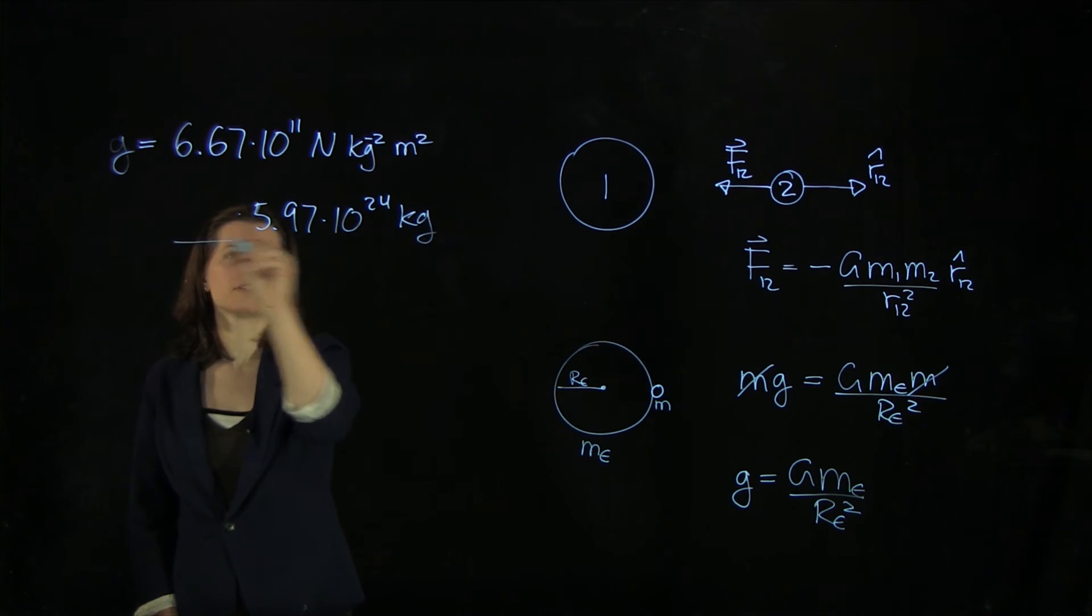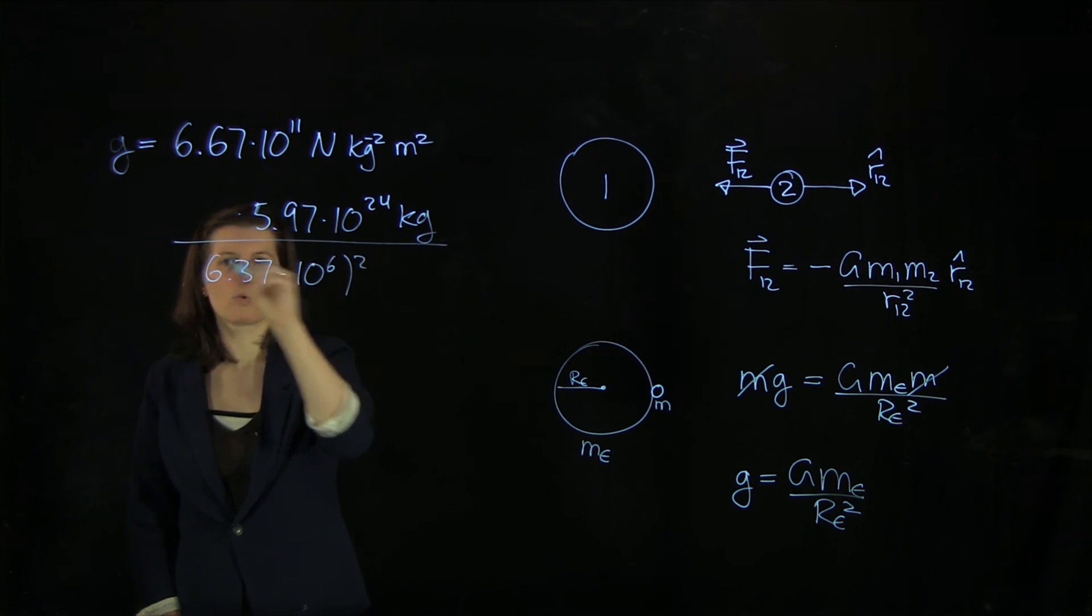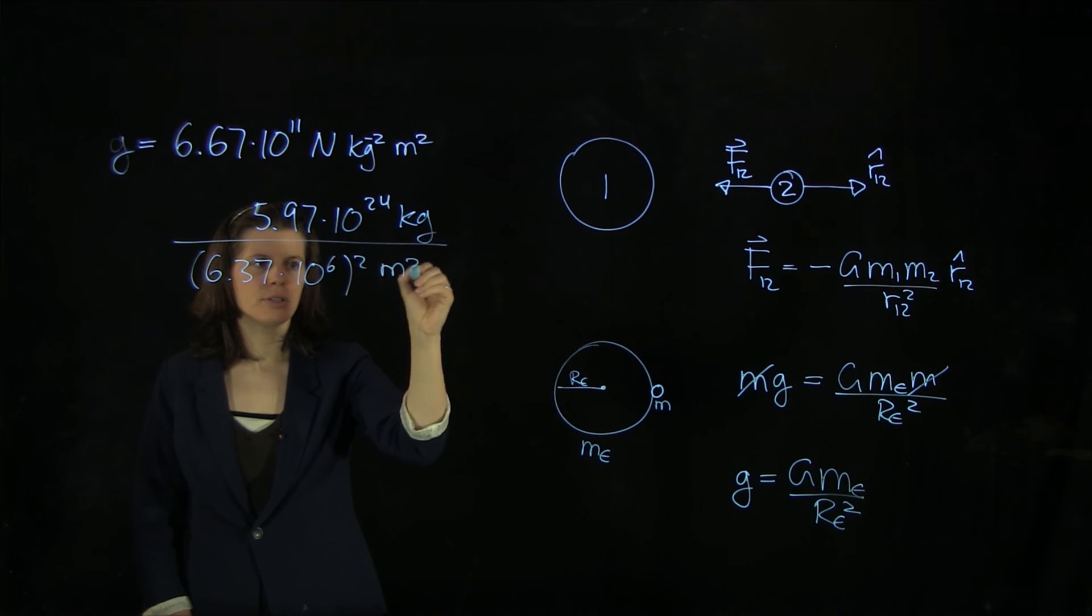And then we have to divide this through the Earth radius, 6.37 times 10 to the 6. And we have to square that, and we have to square the meters.